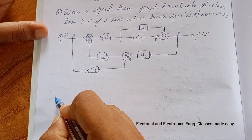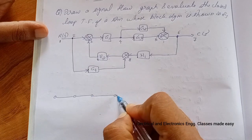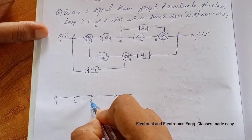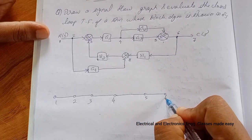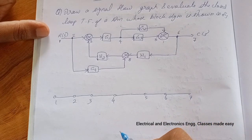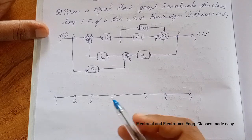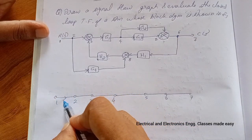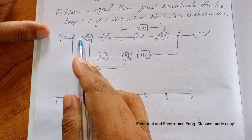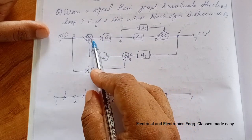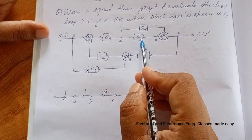Draw nodes one through eight. From node one to two the transmittance is one, then two to three is also one. From three to four the value is G1, and four to five is G3.